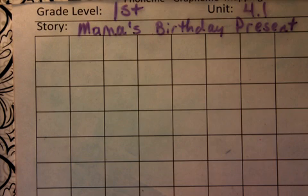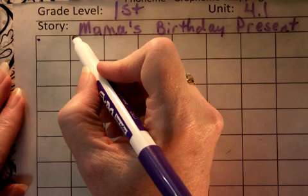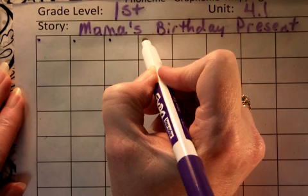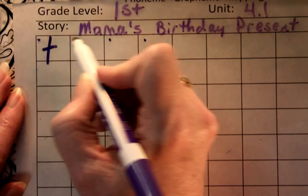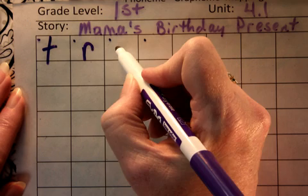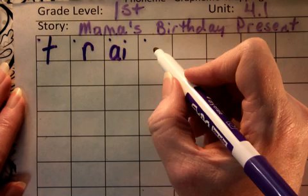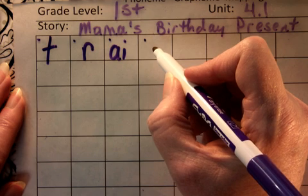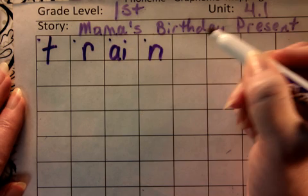Let's get started on our words. The first word is TRAIN. I rode the TRAIN. T-R-A-I-N. The first sound is T, then R. In the middle of the word is AI. The last sound is N. TRAIN.